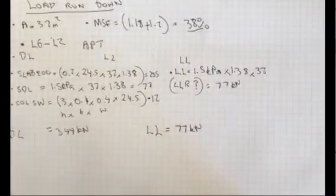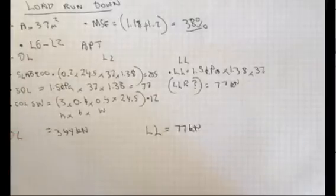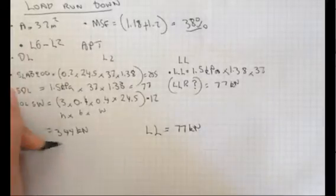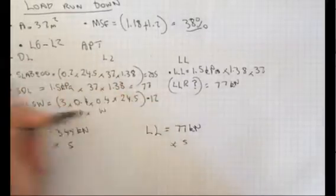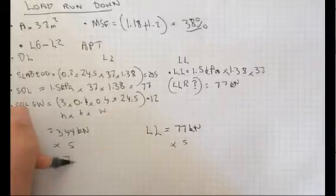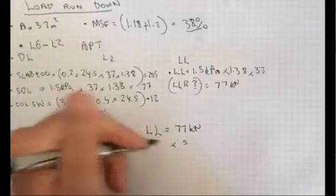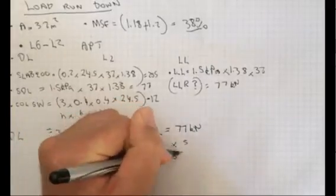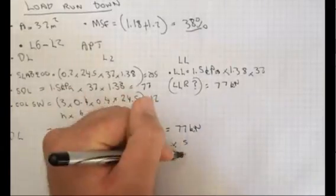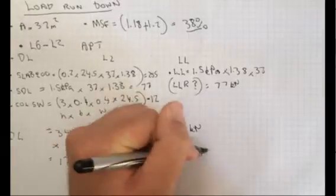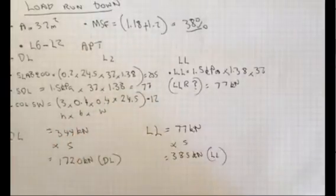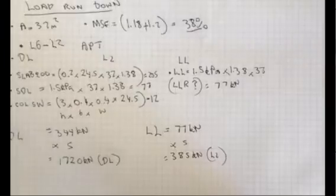As we said, this is for one floor only. What we need to do now is calculate for the five floors up to level 2. Times 5, times 5 equals 1720 kN dead load and 385 kN live load. That means up to level 2, these are the loads, so we can design now the level 1 column.